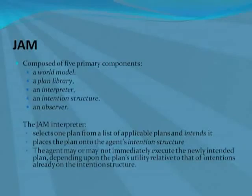Another Java-based language is called JEM. Each JEM agent is composed of five primary components: a world model, a plan library, an interpreter, an intention structure, and an observer.